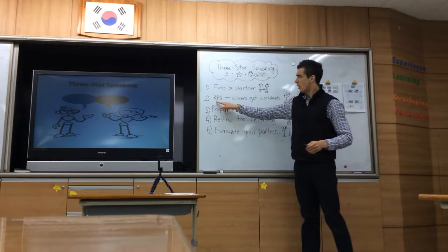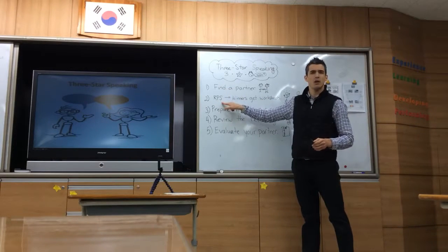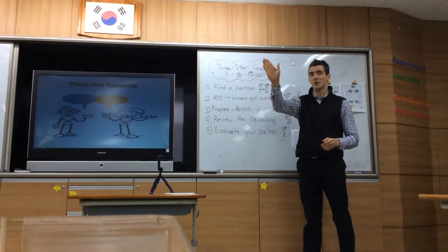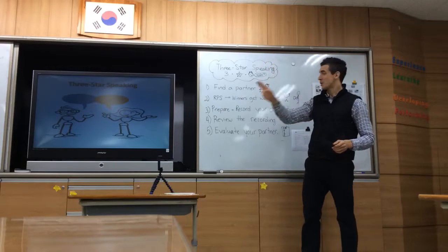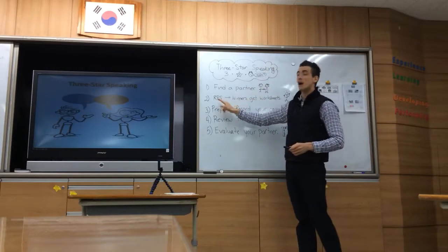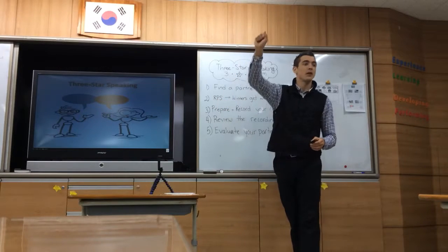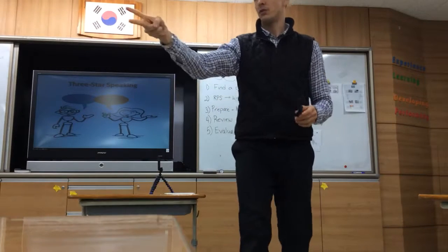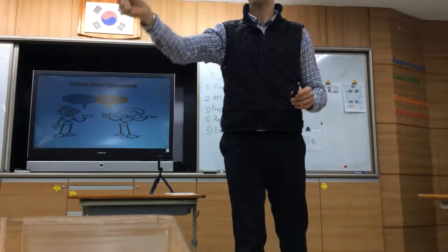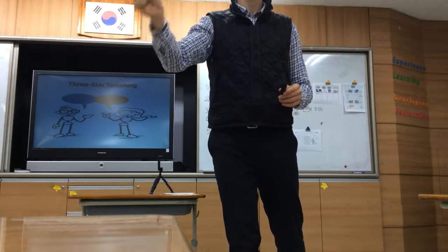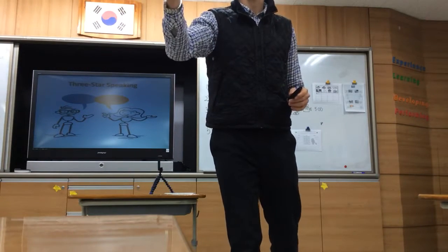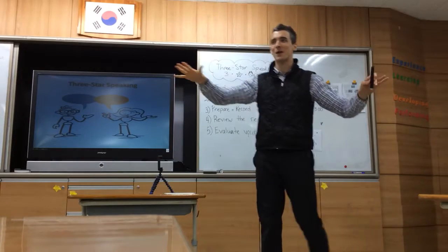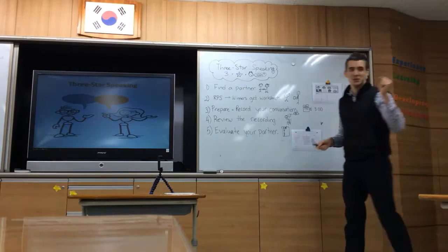Step number two: R-P-S. What is R? Rock. P — paper. S — scissors. With your partner, rock, paper, scissors, shoot! Okay, it looks like everybody has a winner. Everybody has won the rock, paper, scissors game.